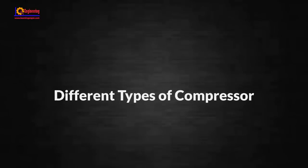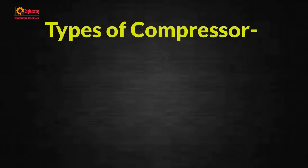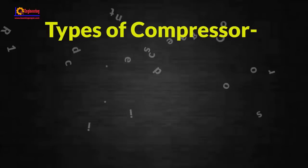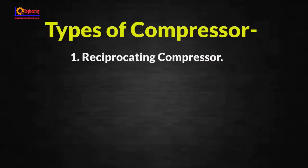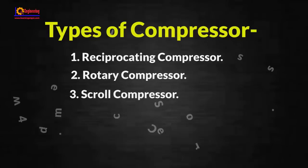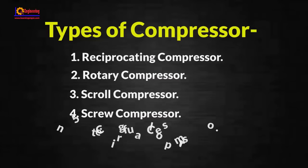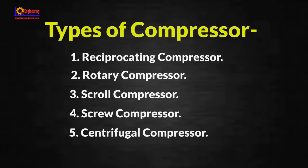In this video we will see the different types of compressors. There are mainly five types of compressors normally used in industry: one, reciprocating compressor; two, rotary compressor; three, scroll compressor; four, screw compressor; five, centrifugal compressor.